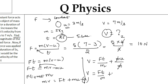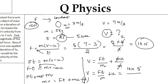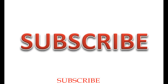Substituting the values: the constant force is 10 Newtons, time is 5 seconds, mass is 5 kg, and initial velocity U is 3 meters per second. So V = (10 × 5) / 5 + 3. The 5s cancel, giving 10 + 3 = 13 meters per second.